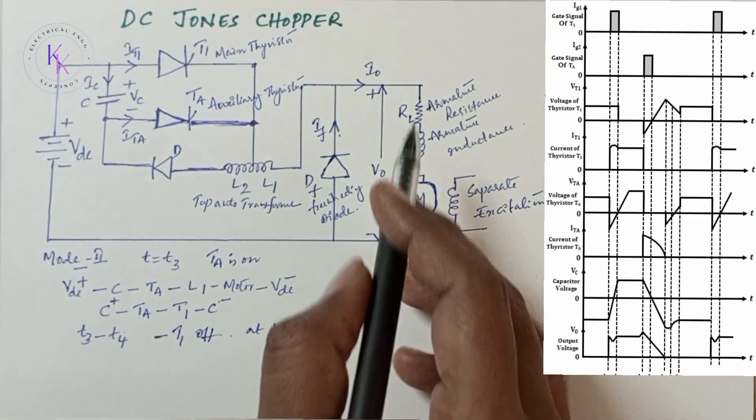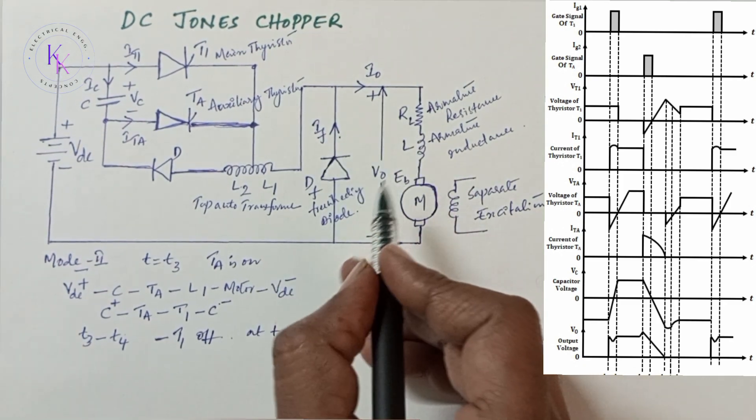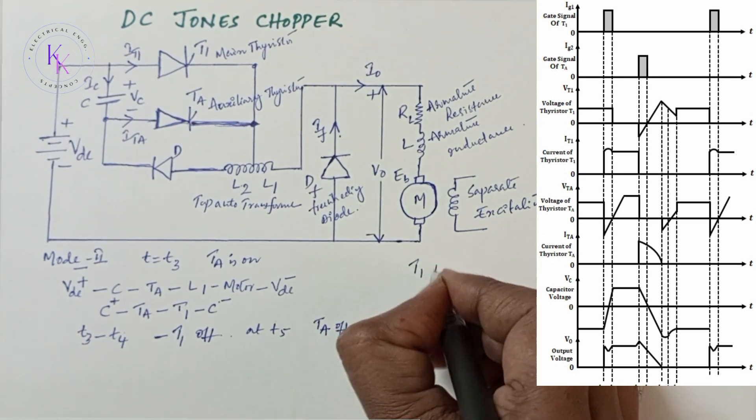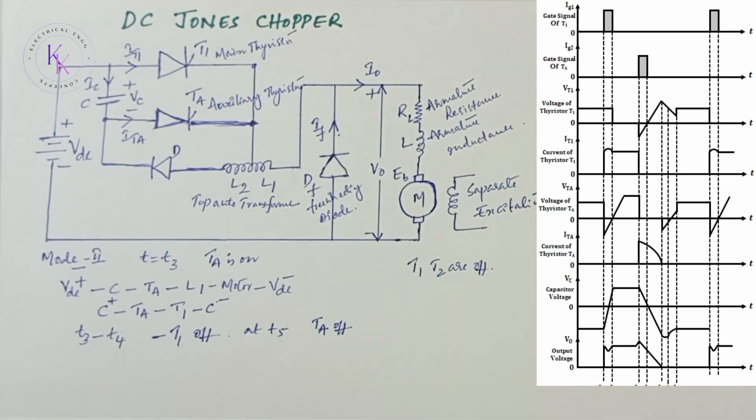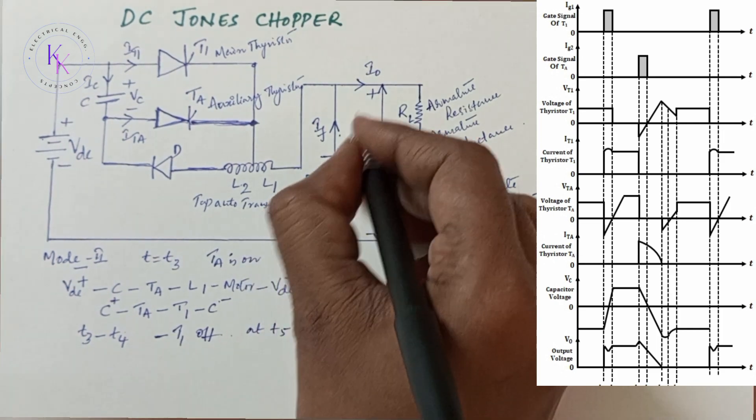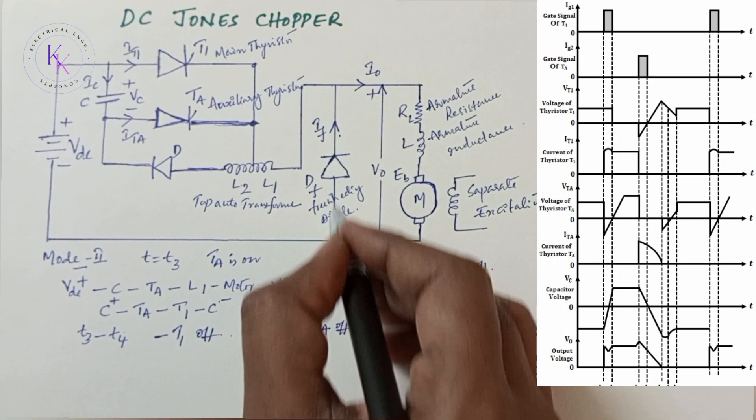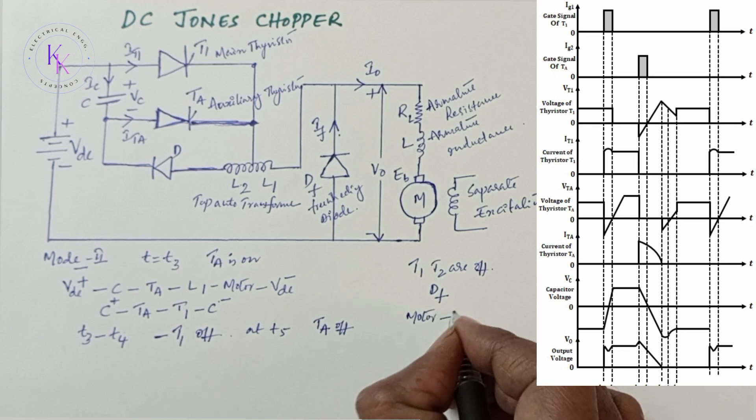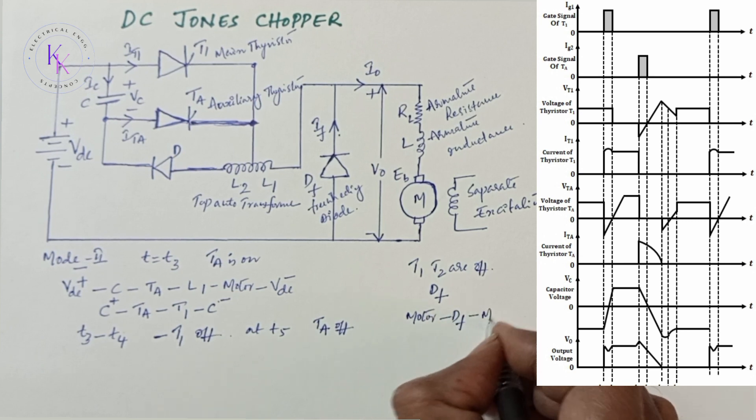As the load is inductive type, it stores energy when T1 and TA are off and releases its stored energy through freewheeling diode DF which is connected across the load. The current direction is from motor to freewheeling diode DF to motor.